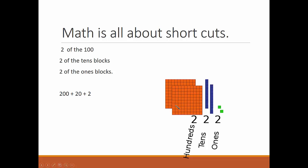I could look at these blocks and say I have two blocks with 100 pieces, two blocks with 10, and two blocks that are just one piece each. I could shorten that and say 200 plus 20 plus 2, or I could put all three together and write it as 222.